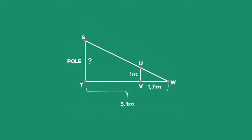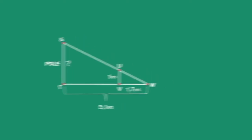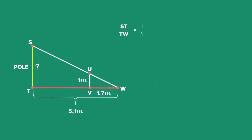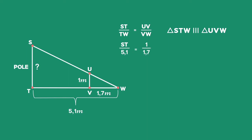Using similarity, we can now calculate the length of side ST as the sides of the two triangles are in proportion. Side ST over TW is equal to side UV over VW, since triangle STW is similar to triangle UVW. Filling in the values of the known sides, we get ST over 5.1 is equal to 1 over 1.7. Cross-multiplying, we get that ST is equal to 1 times 5.1 over 1.7, which equals 3 metres.